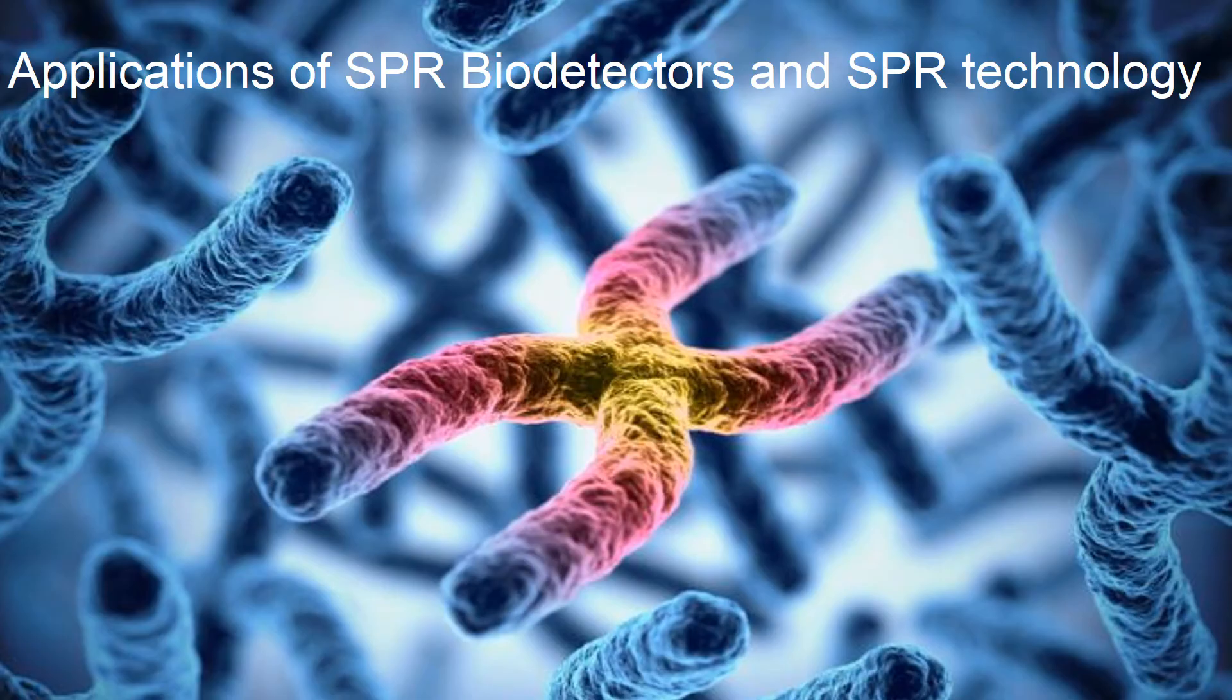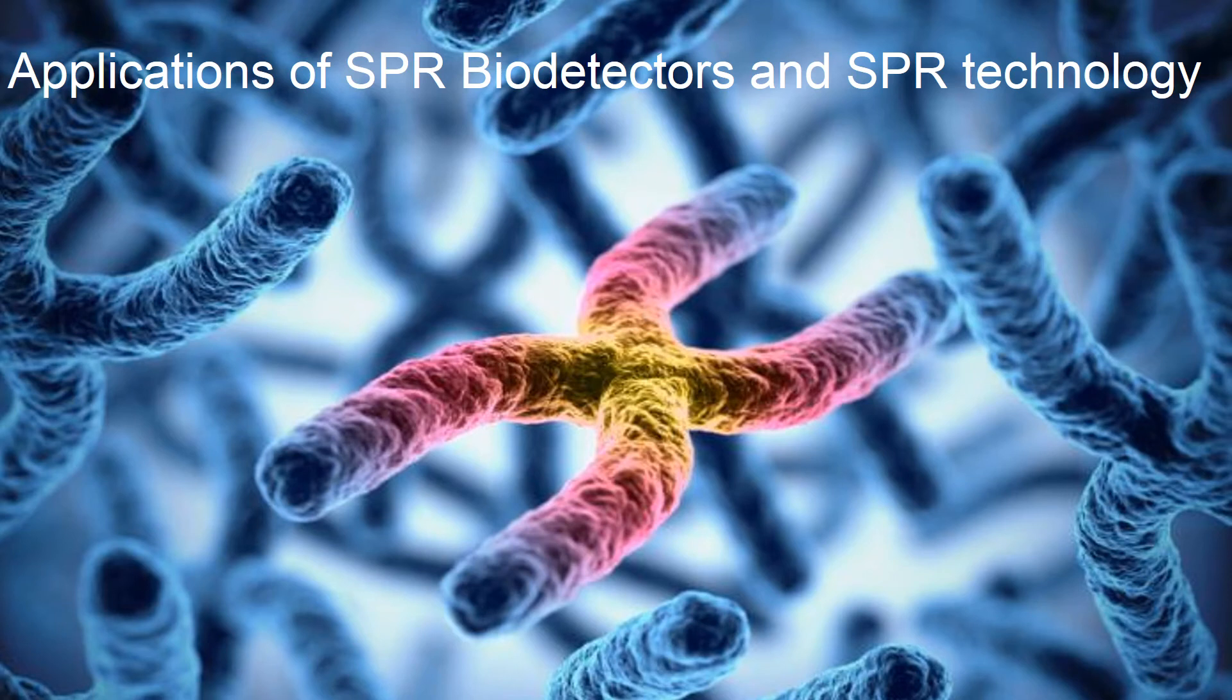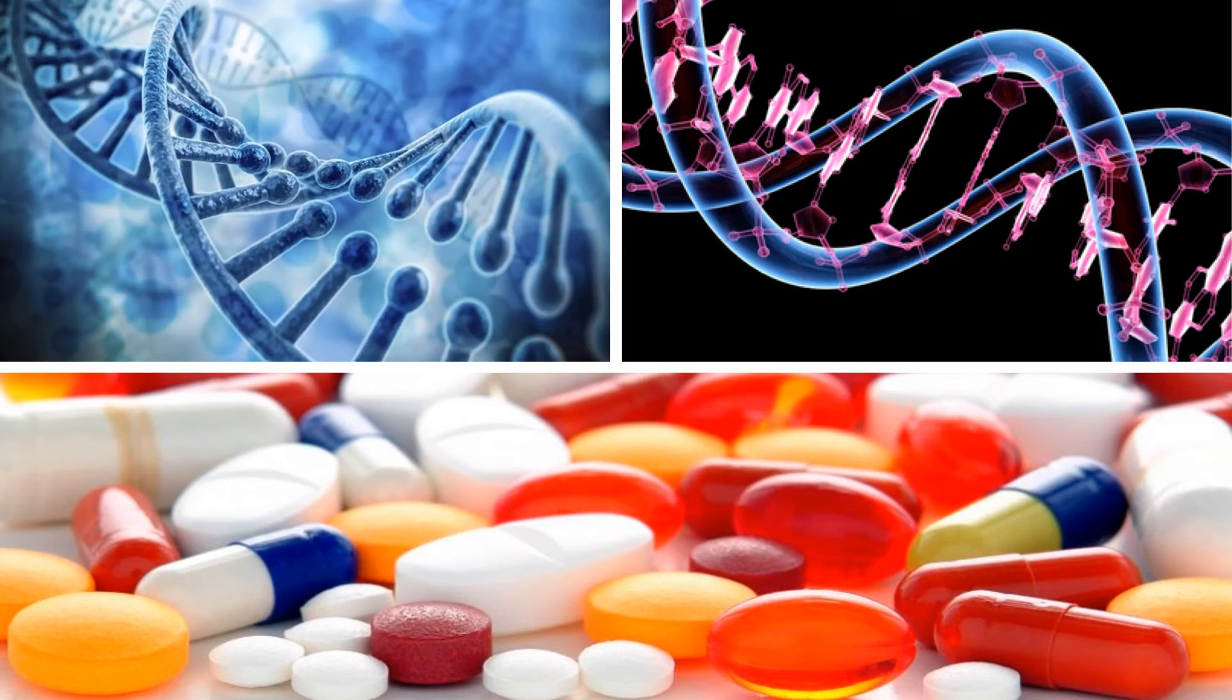Now, let us look at applications of SPR biodetectors and SPR technology. SPR biodetectors have replaced many detection techniques. They can do immediate tests on bovine growth hormone in milk, perform DNA and RNA assays and test for presence of viruses.